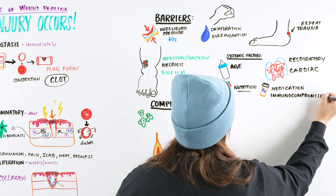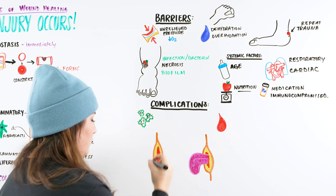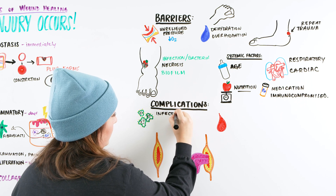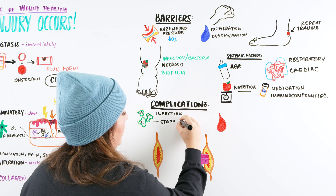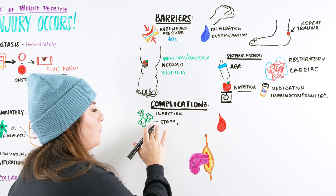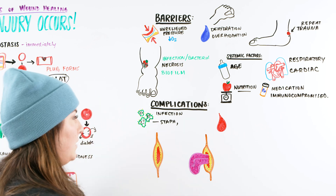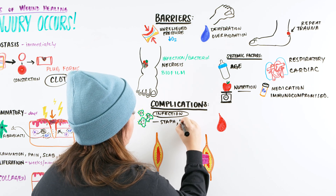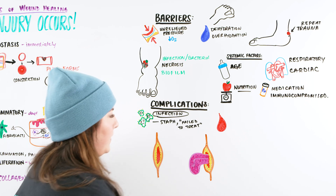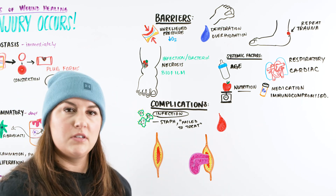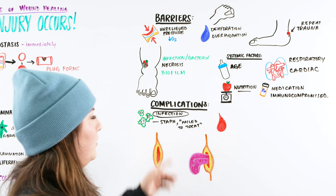Now let's talk about some complications, which overlap with barriers. Infection is one — think staph, or a failed-to-treat scenario, where the antibiotic given didn't correctly treat the bacteria, which then comes back worse. Failed-to-treat means we give an antibiotic we believe will fix the issue, but it doesn't — this happens commonly in UTIs when we think we know the bacteria type but it turns out differently.